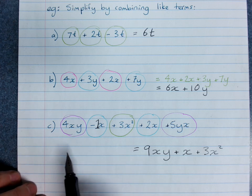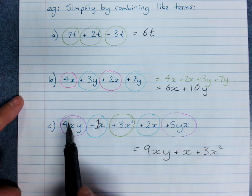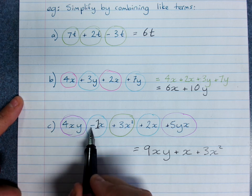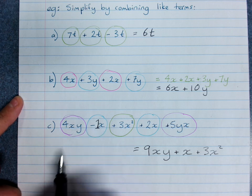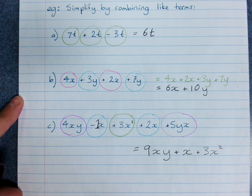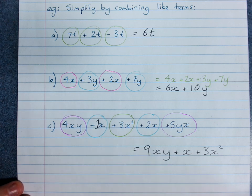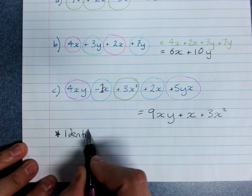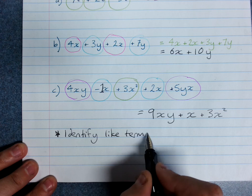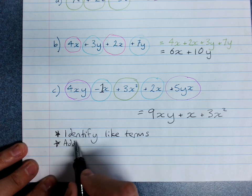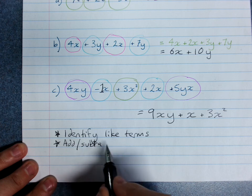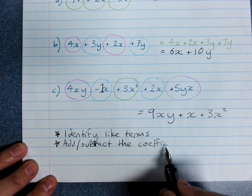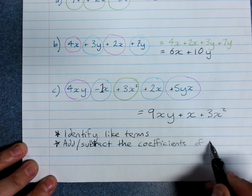So be very careful when you're simplifying by combining like terms. This works for adding and subtracting. You keep the sign, plus or minus, with the term that comes after it. And you're counting how many lots you've got of identical things. And the rule that we need to follow is: step 1, identify like terms. Step 2 is add or subtract the coefficients, the numbers in front, of like terms only.